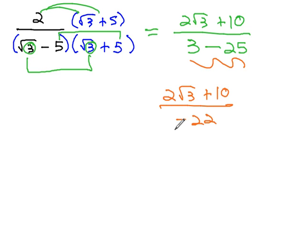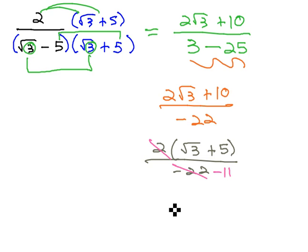To reduce the fraction, we know we have to factor first. Pull the GCF 2 out, leaves behind root 3 plus 5 over negative 22, and then finally divide out the 2, leaving behind a negative 11. Our final answer, root 3 plus 5 over negative 11.